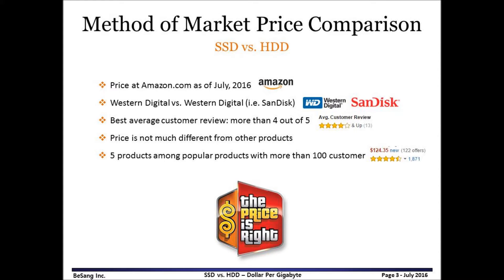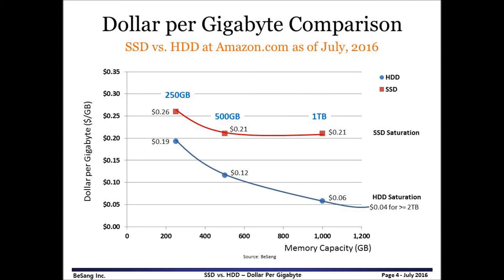Here is the method of market price comparison. Prices are checked at Amazon.com among Western Digital products. Five products are chosen at each memory size to compare prices among popular and high customer review rate. Here is a dollar per gigabyte comparison based on memory capacity. The Y axis shows dollar per gigabyte and the X axis shows memory capacity — 250 gigabyte, 500 gigabyte, and 1 terabyte are compared in this graph.